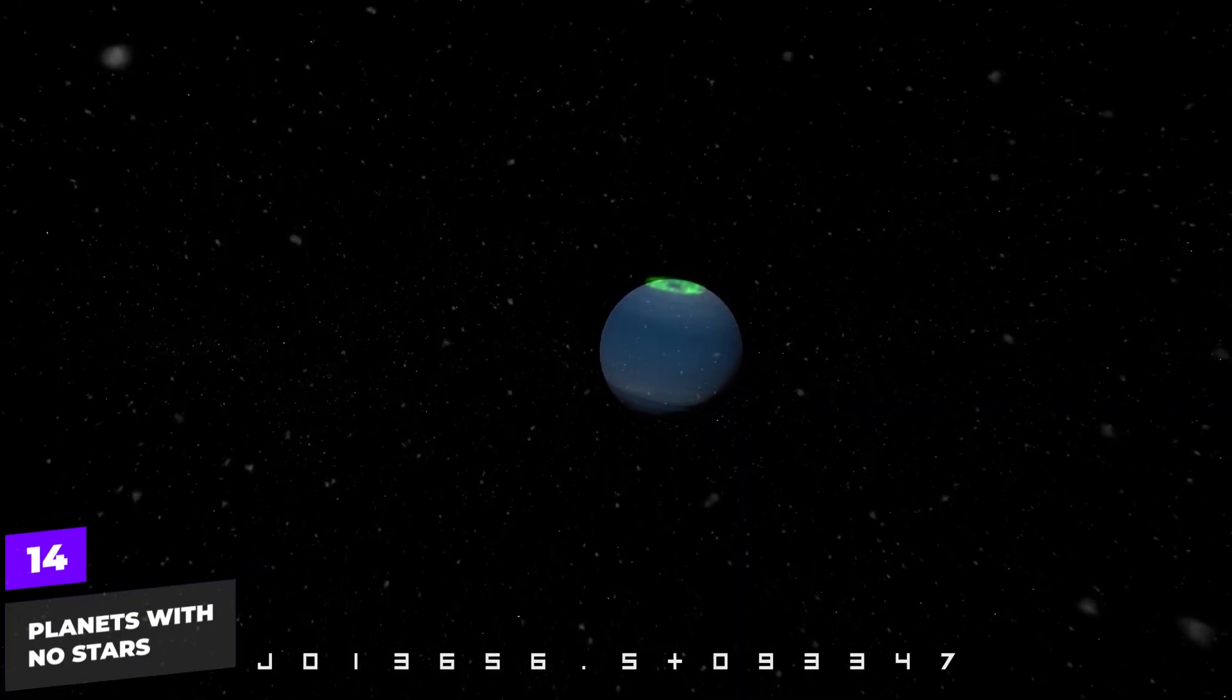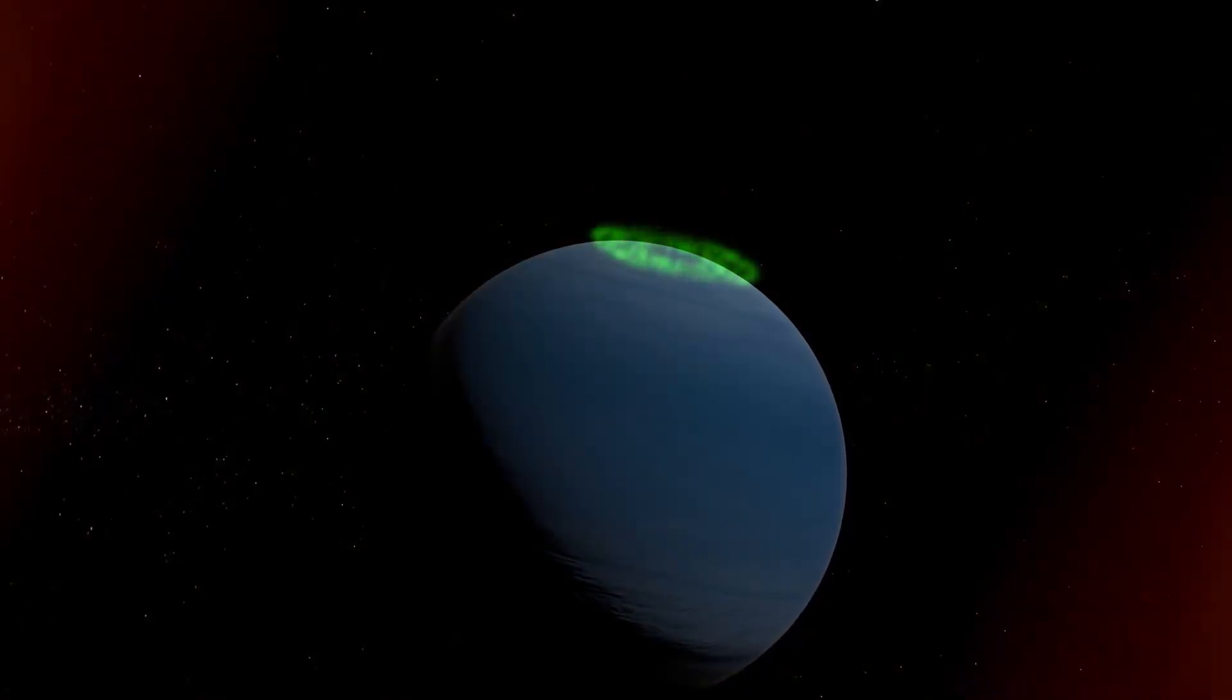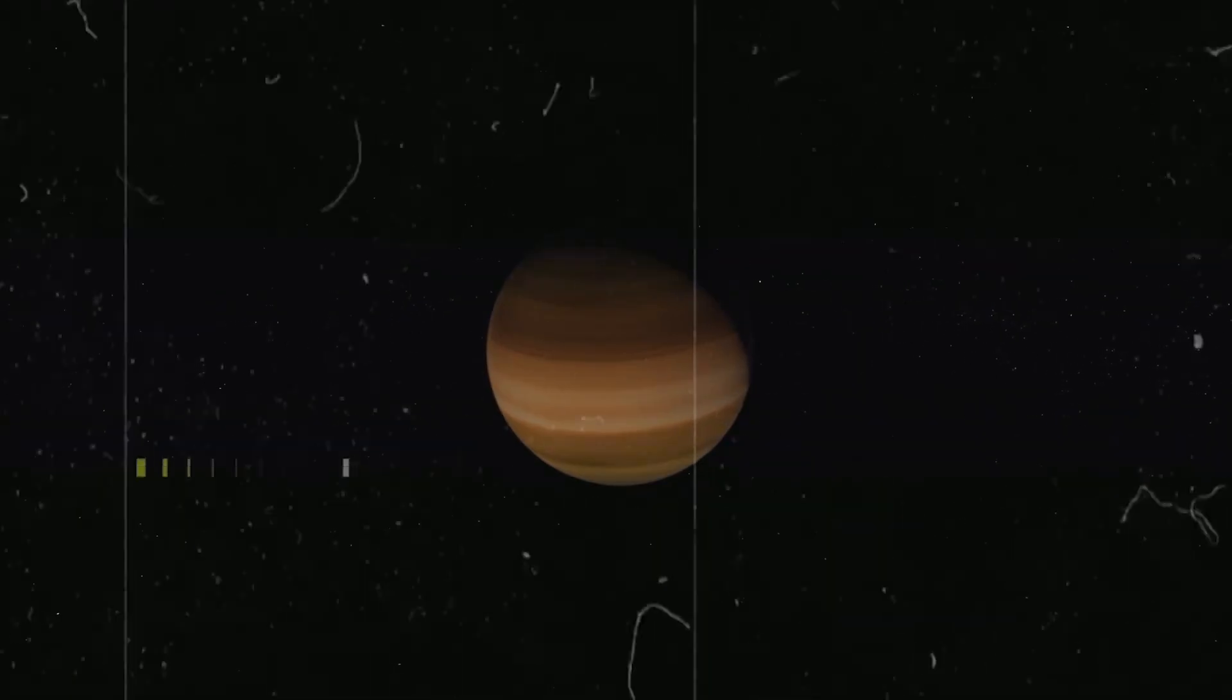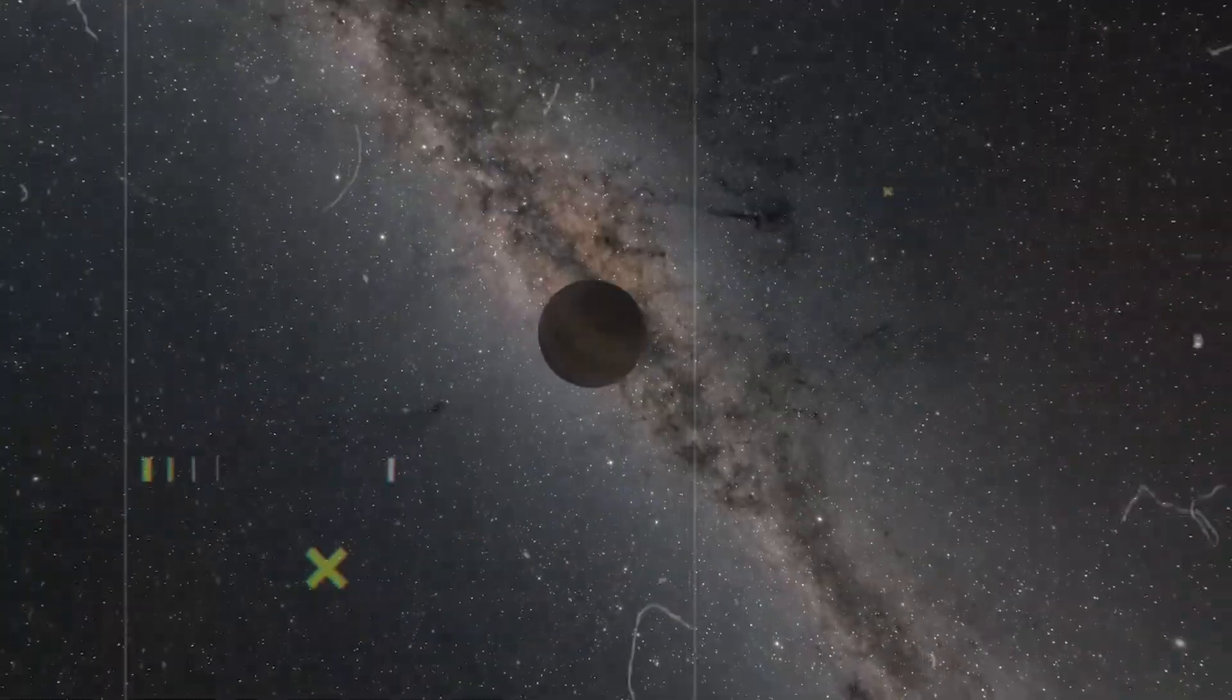Planets with no stars. Rogue planets or interstellar planets are not bound by any star and drift through the galaxy alone. These lonely planets roam the darkness of space and could be more numerous than the stars in our Milky Way.